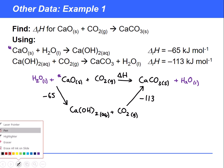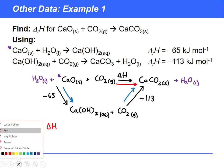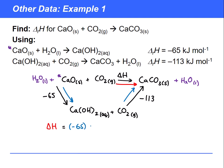We look for our starting and finishing points. The starting point is where all the arrows are born, and the finishing point is where all arrows point to. We can have a direct route or an indirect route in blue, and Hess's law tells us the energy change for both will be identical. So ΔH = -65 + (-113) = -178 kJ/mol.